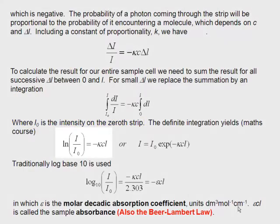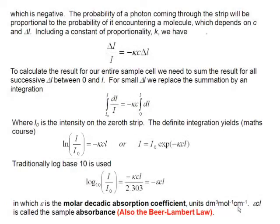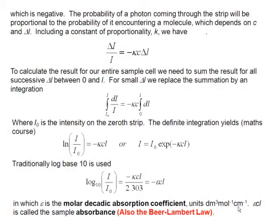And that gives you the equation ln(I/I₀) equals minus κcl, which we can rewrite as an exponential function, I equals I₀ e^(-κcl). The traditional way to assess the logarithm of I over I₀ is to use logs to the base 10.